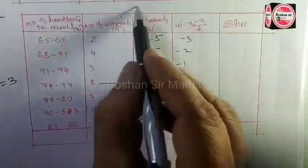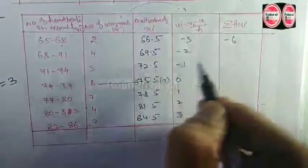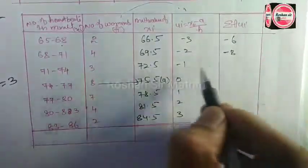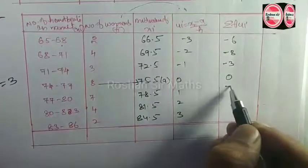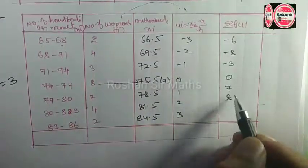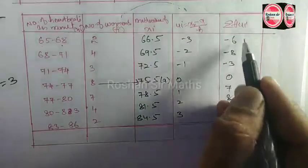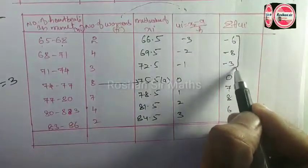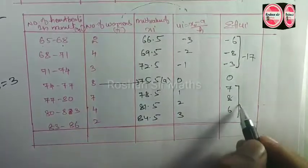In Sigma FiUi, we multiply these two. 2×(-3) is -6, 4×(-2) is -8, 3×(-1) is -3, 8×0 is 0, 7×1 is 7, 4×2 is 8, 2×3 is 6. For the negative values the sum is -17, and for the positive values the sum is 21.